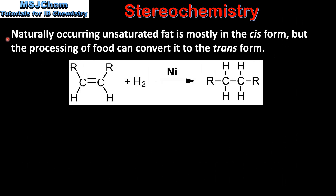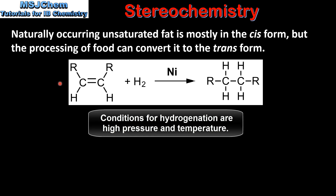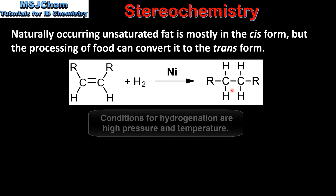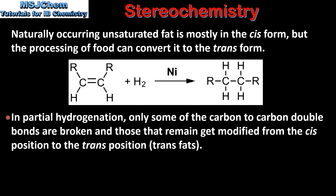Naturally occurring unsaturated fat is mostly in the cis form, but the processing of food can convert it to the trans form. In hydrogenation, unsaturated fatty acids are reacted with hydrogen in the presence of a nickel catalyst, producing saturated fatty acids. In partial hydrogenation, only some of the carbon to carbon double bonds are broken, and those that remain get modified from the cis position to the trans position.